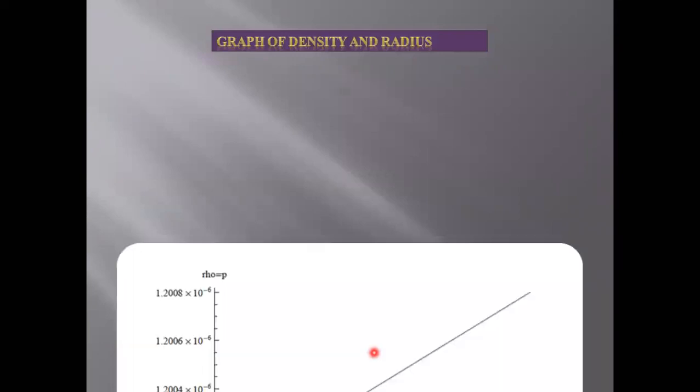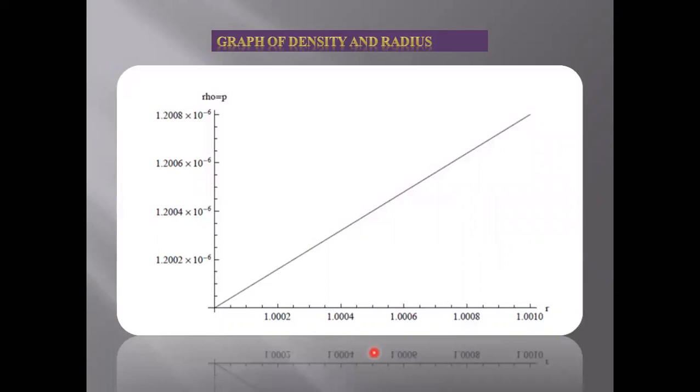Graph of the density and radius. As you can see here, the radial component is varying, is directly proportional to the pressure or the density.